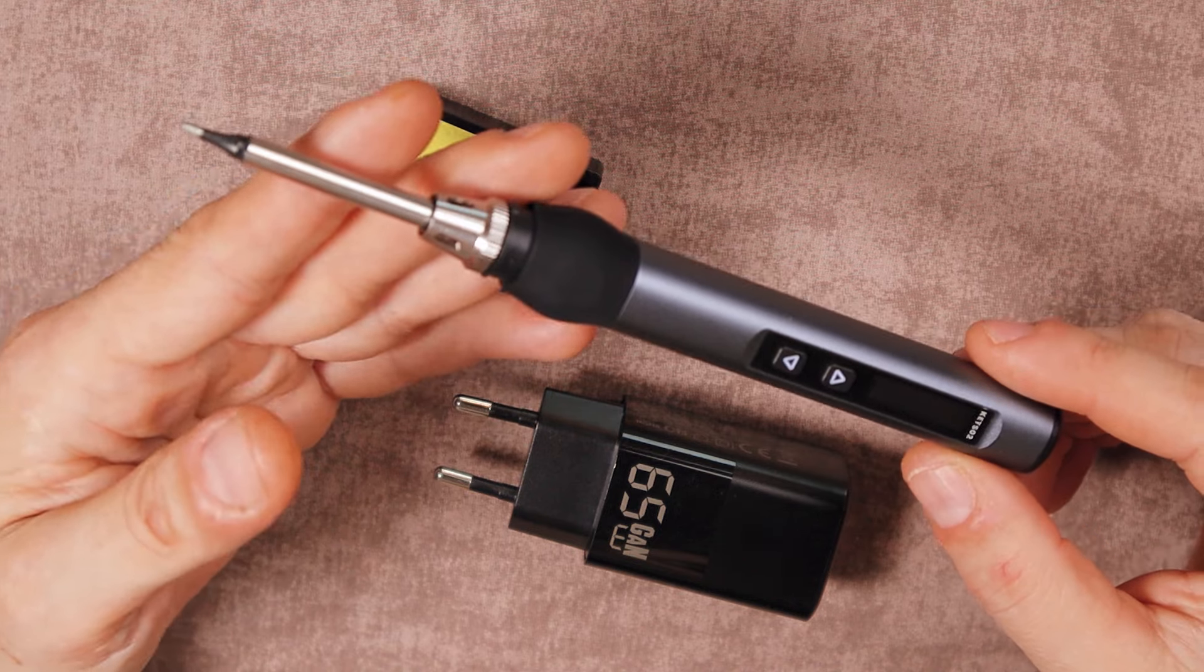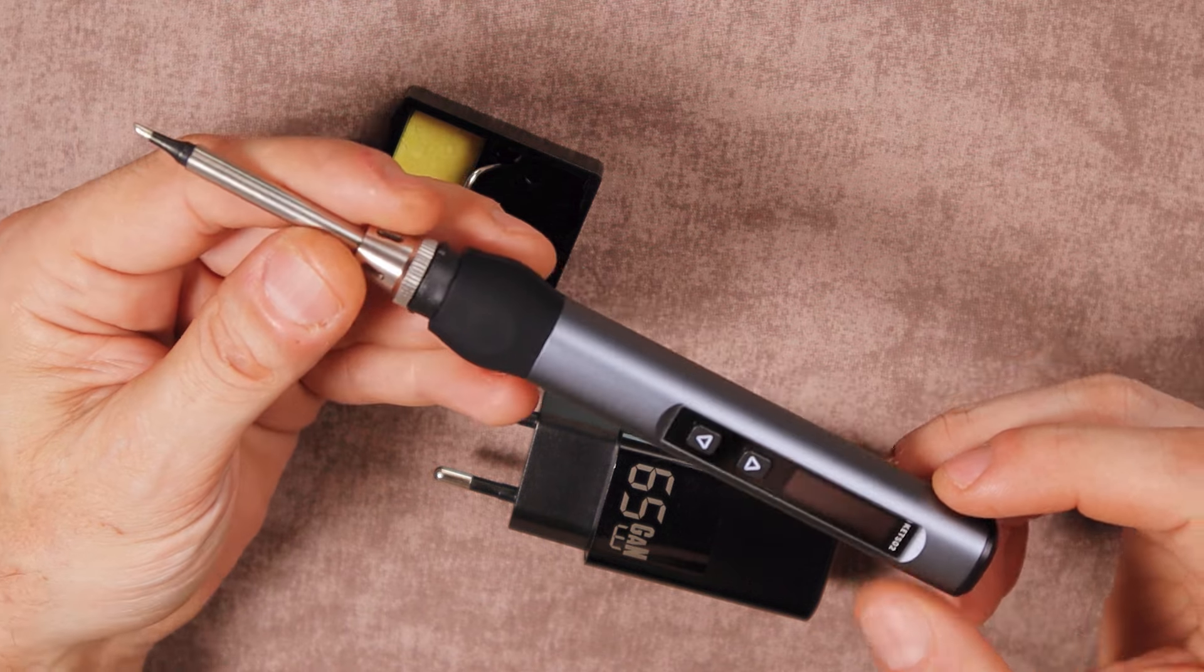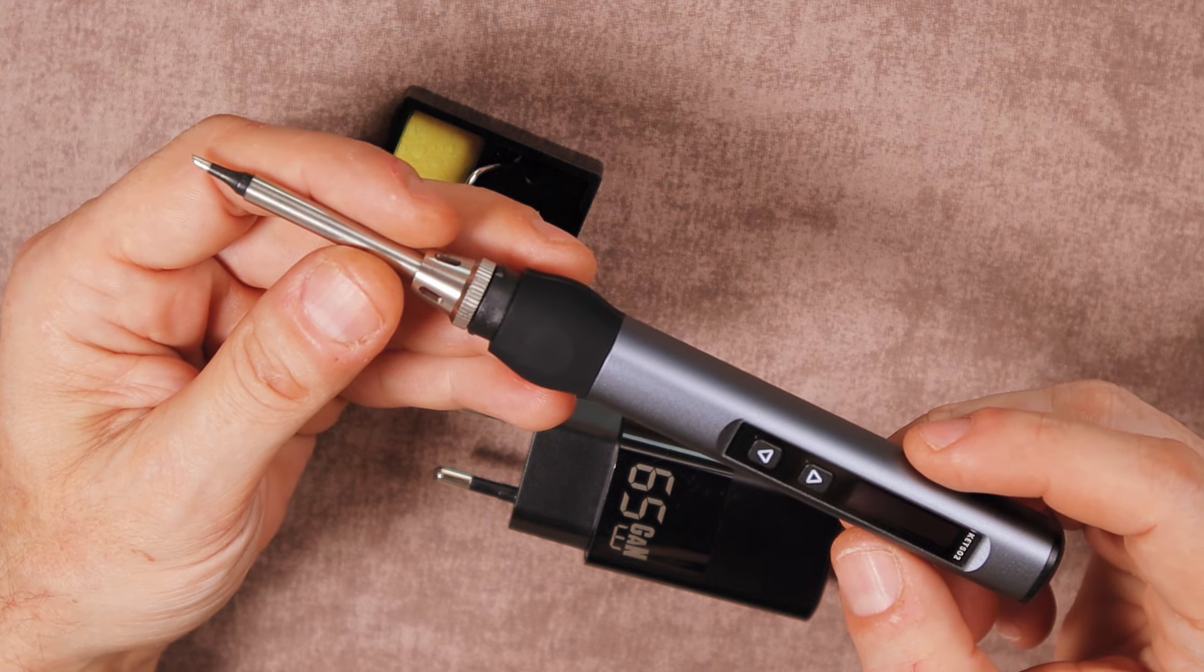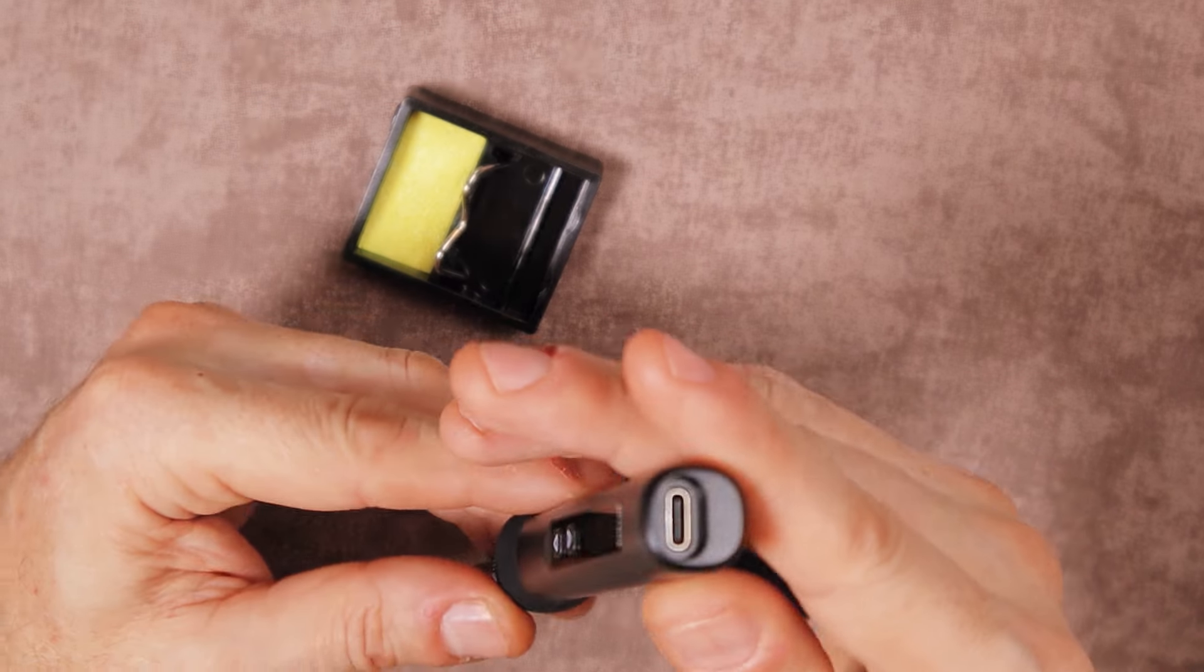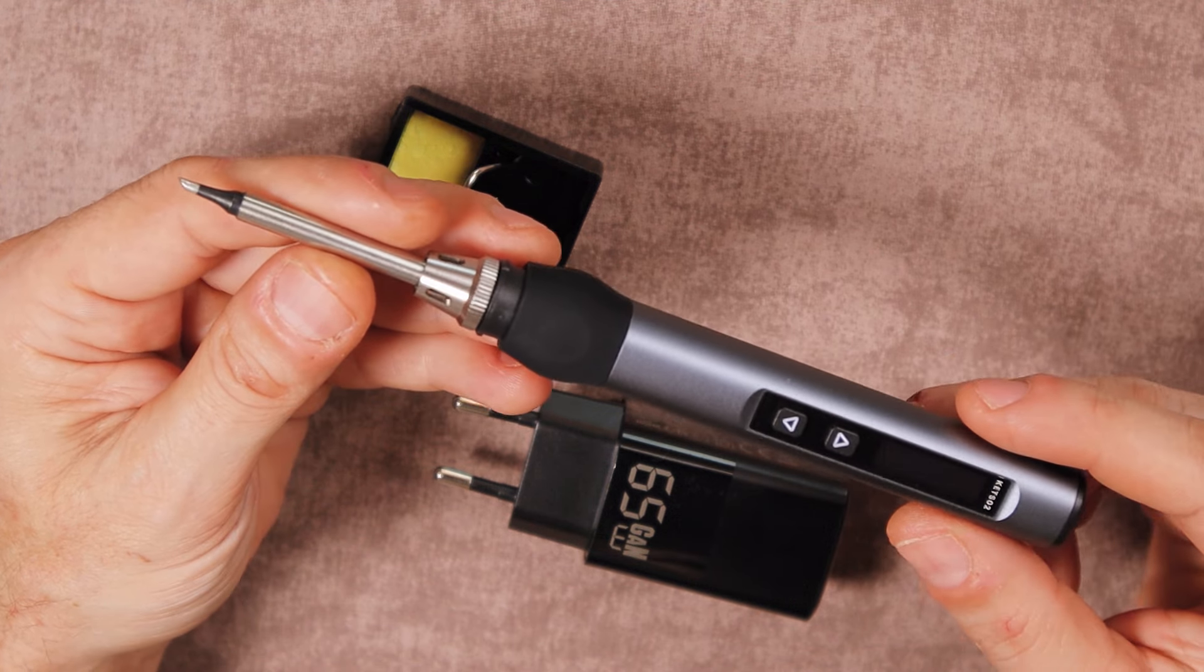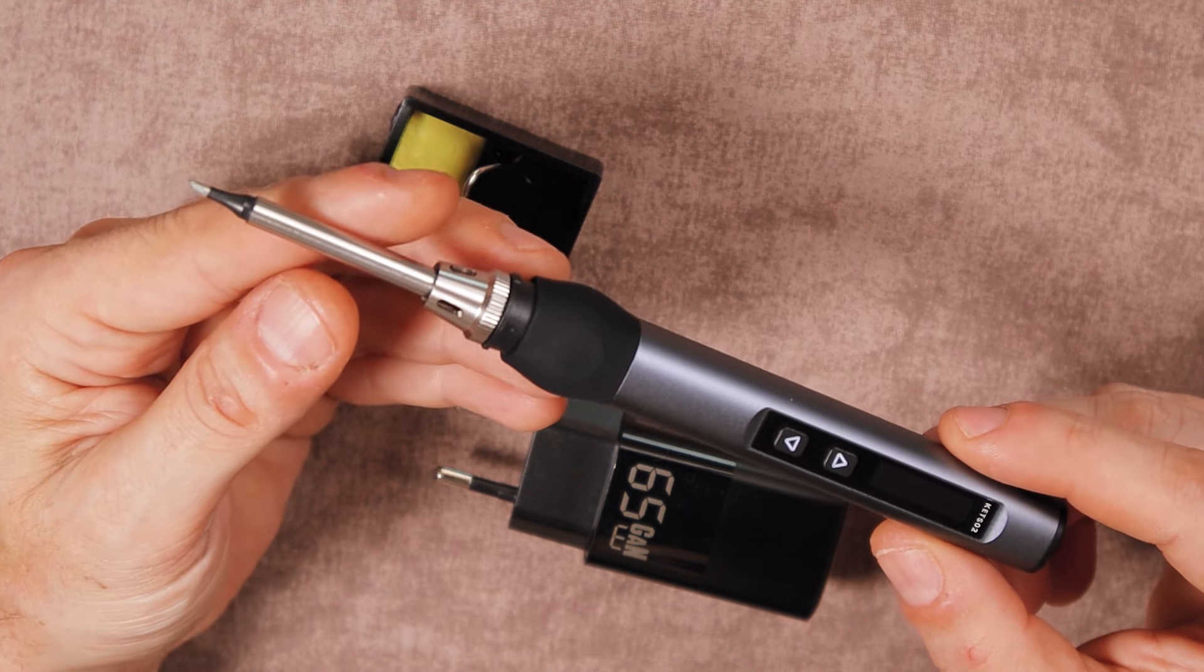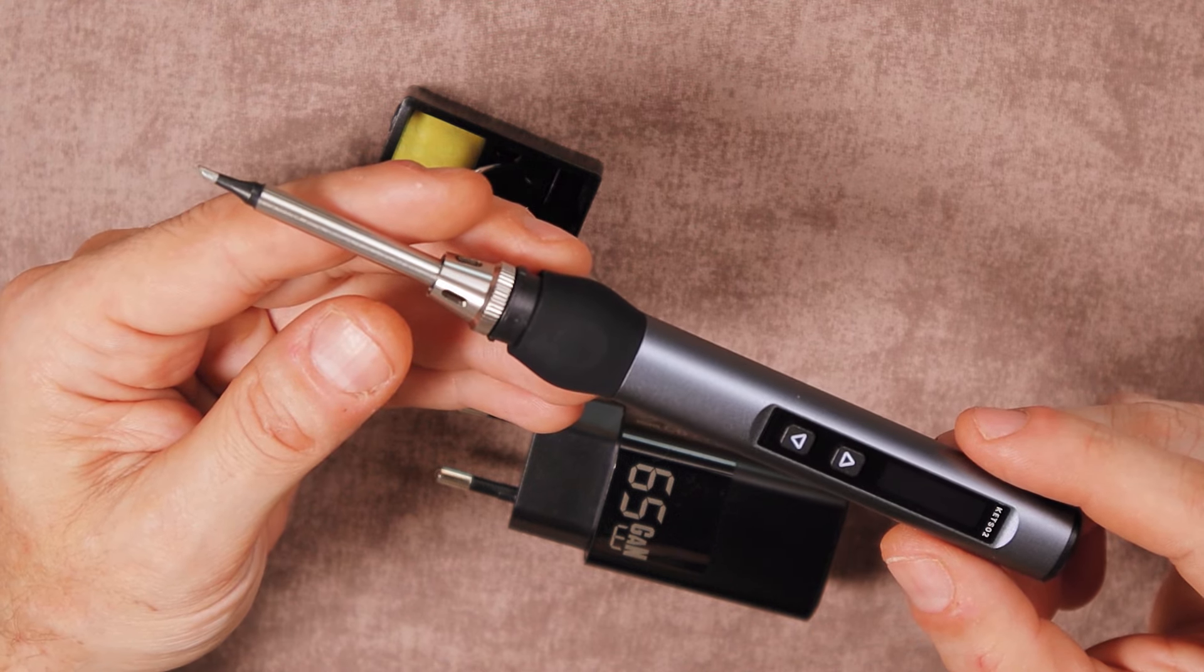Quick specifications on the soldering iron. It has a power of 65 watts. It has a nice OLED screen, 0.87 inch. The power is between 9 volts up to 20 volts, and it has a USB-C type charging port. The working temperature is between 80 up to 420 Celsius degrees, or if you're from the US, between 176 up to 788 Fahrenheit.